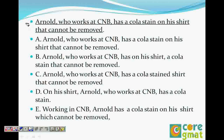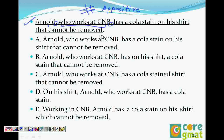The second question: 'Arnold, who works at CNB, has a cola stain on his shirt that cannot be removed.' The portion 'who works at CNB' is in two commas — we call that an appositive. An appositive is additional information that can be removed from the sentence without changing the core meaning. So the main sentence is just: 'Arnold has a cola stain on his shirt.'